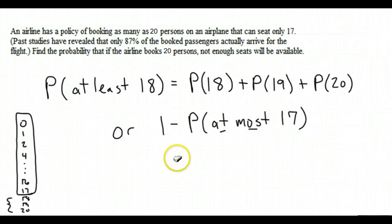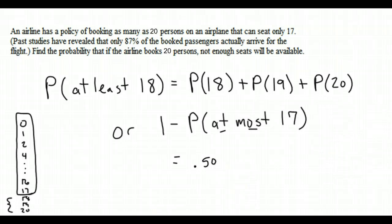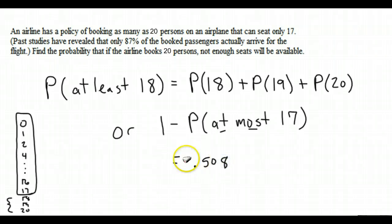So we get 0.502 up to three decimal places, 0.508. So there is a very good chance that they're going to overbook, given that value.